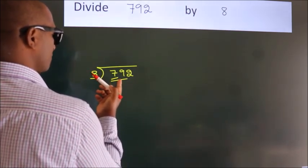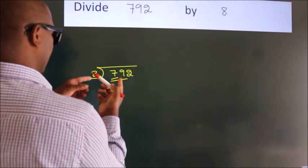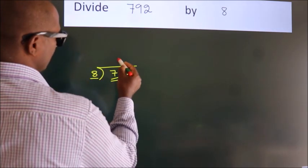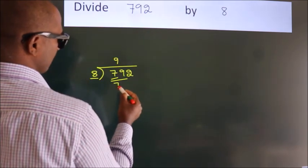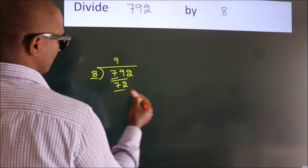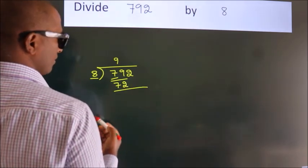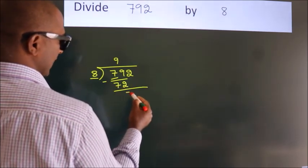A number close to 79 in the 8 table is 8 nines, 72. Now we should subtract. We get 7.